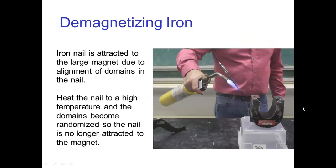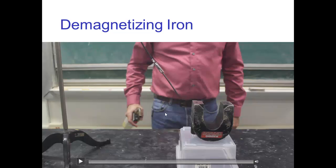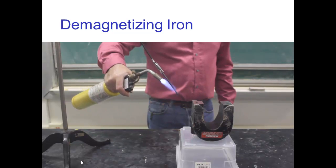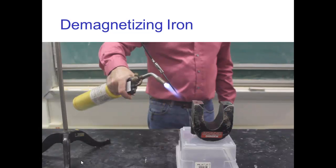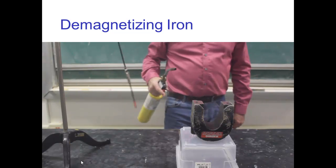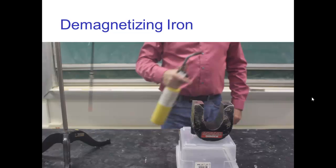Now it's also possible to scramble those magnetic domains and the easiest way to do that is by raising the temperature which produces a lot of random molecular motion and that will demagnetize a piece of iron. So here you see a nail which is hanging and it is attracted to the horseshoe magnet. Now I'm going to heat up the nail and the nail is going to get red hot. Once I get it hot enough, I have scrambled those magnetic domains inside the nail and it can't retain alignment and so it's no longer attracted to the horseshoe magnet.